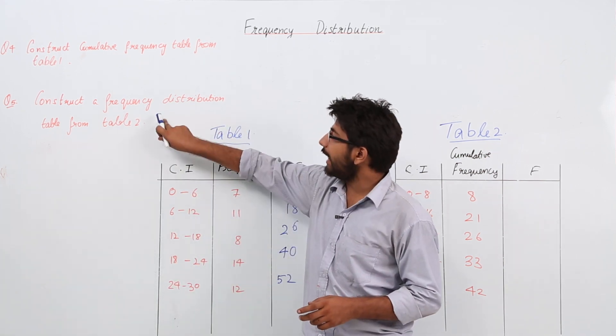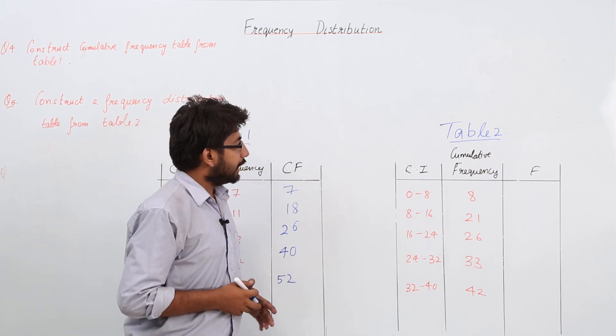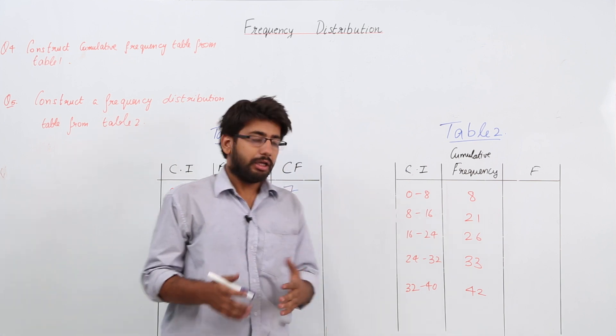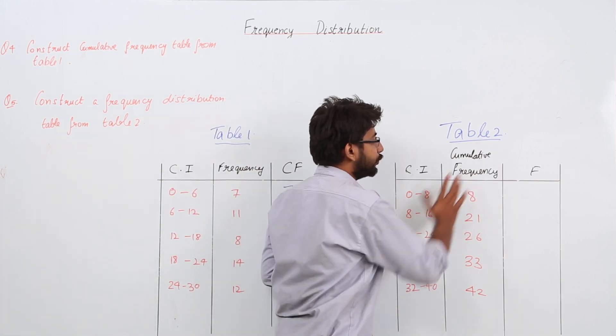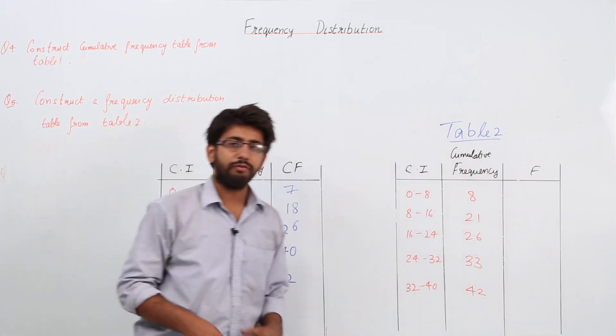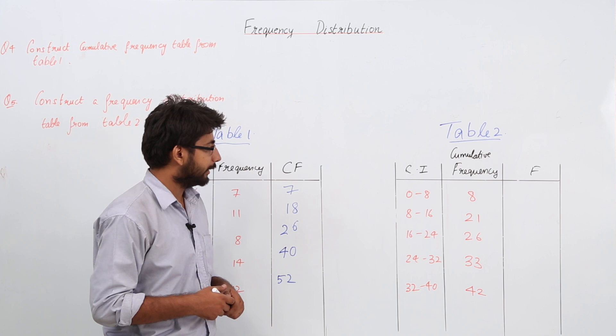In question number 5, we have to construct a frequency distribution table. We have been given the cumulative frequencies, but using this column of cumulative frequency, we have to find out the value of the frequencies of each class interval. That means we have to construct a frequency distribution table.